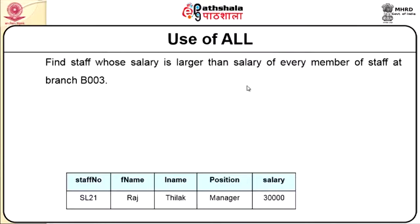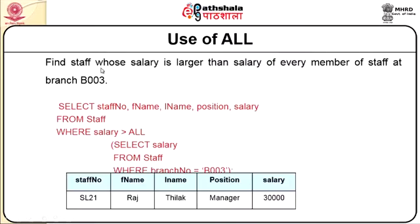Now we look at the use of the ALL operator. Find staff whose salary is greater than the salary of every member of staff at branch B003. SELECT staff number, first name, last name, position, salary FROM staff WHERE salary greater than ALL (SELECT salary FROM staff WHERE branch number = 'B003'). Only those staff whose salary exceeds every salary in branch B003 will appear in the result.